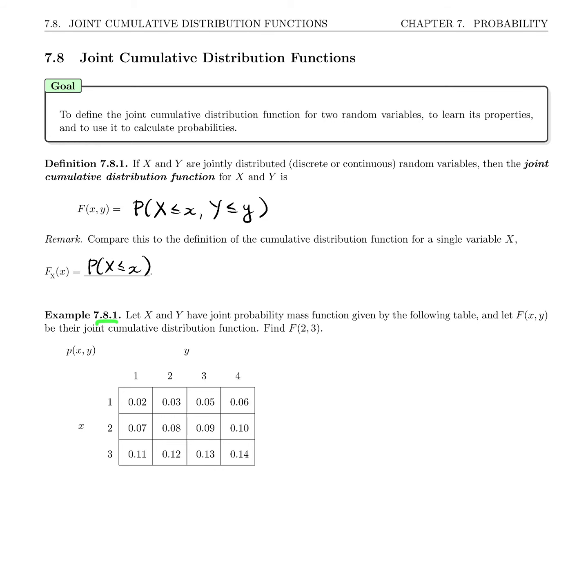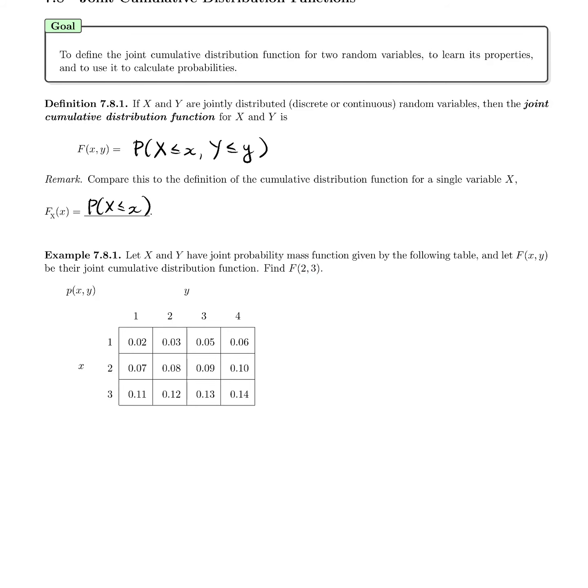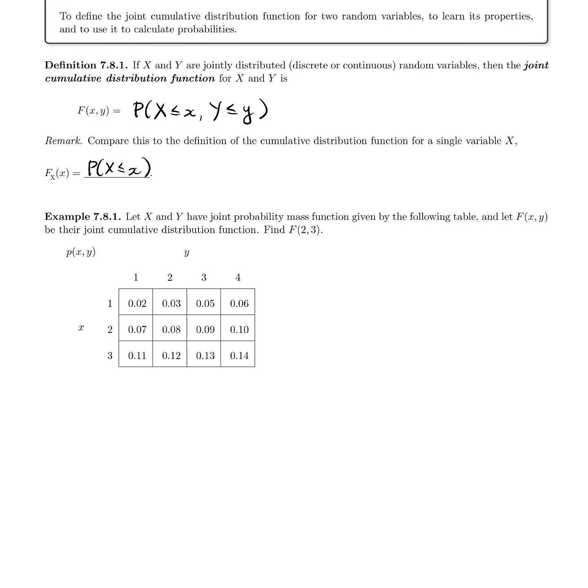Example 7.8.1: Suppose that X and Y have joint PMF given by the following table, and let F(x,y) be their joint cumulative distribution function. We're asked to find F(2,3). Well, F(2,3) is exactly by this definition above, the probability that X is less than or equal to 2, and that Y is less than or equal to 3.